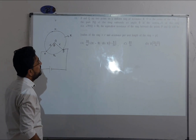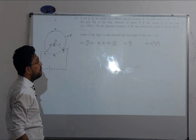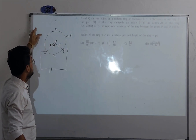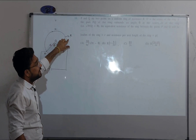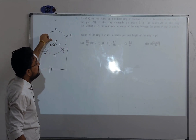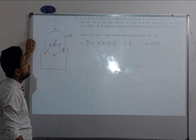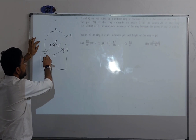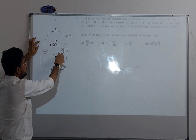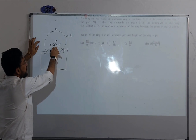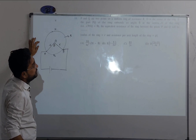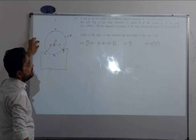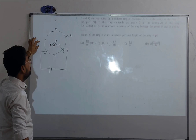P and Q are two points on a uniform ring of resistance R. O is the center of the ring. The part PQ of the ring subtends angle theta at the center — meaning the minor arc created by PQ subtends angle theta at the center of the ring. We need to find the equivalent resistance of the ring between P and Q.